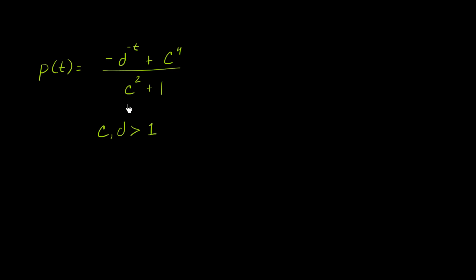Let's say that the position of some particle as a function of time is given by this expression right over here: negative d to the negative t power plus c to the fourth over c squared plus 1, where c and d are constants, and both of them are greater than 1. What I want to do over the course of this video is see what we can infer based on this function definition.